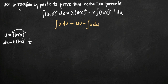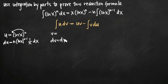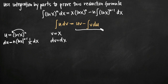So du equals n times ln of x to the n minus 1 times 1 over x dx, and dv was just dx. We also take the integral of dv to get v — the integral of dx is simply x. Now that we've identified u, du, v, and dv, we can plug them into our formula. We identified u and dv in our original integral, and now we'll plug u, v, and du into the right-hand side of our integration by parts formula.